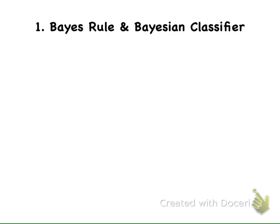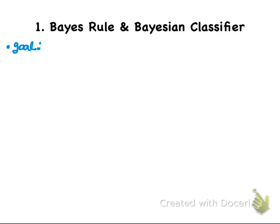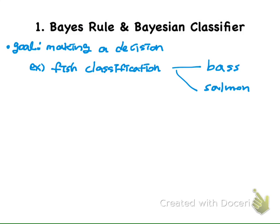Now let us review the concept of Bayes' rule and Bayesian classifiers for the discussion of risk and cost minimization. Our goal is that we want to make a decision — making a decision is the goal of Bayes' rule and Bayesian classifiers.